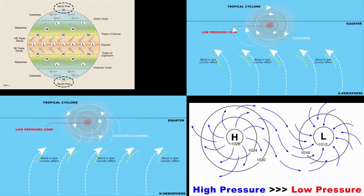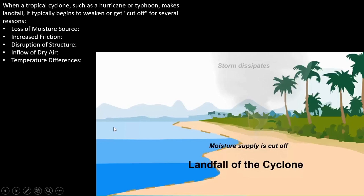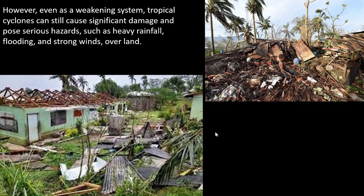Cyclones end near the beach or land due to loss of moisture source — over the ocean there is high moisture, but over land there is low moisture, weakening the cyclone. Additionally, increased surface friction disrupts the structure and flow, and the temperature difference — ocean temperature is high while land temperature is lower — further weakens the cyclone. Although weakened, they still cause significant damage such as heavy rain, flooding, and strong winds.